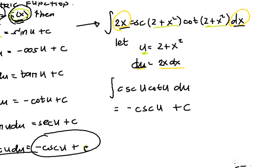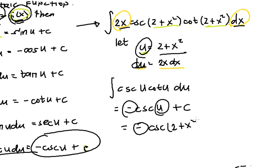What step do we need now? We need to substitute back the value of u, which is 2 + x². So we have negative cosecant(2 + x²) plus c. This is our final integral.